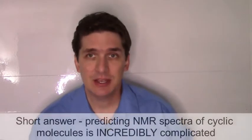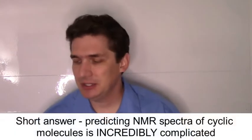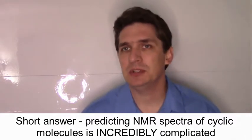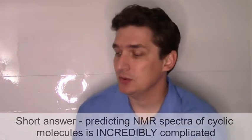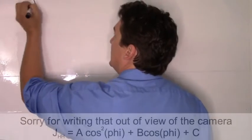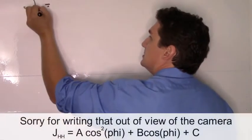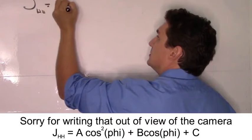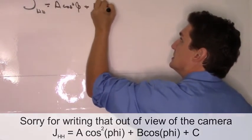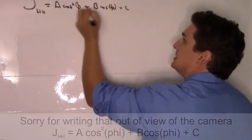We'll start with cyclic molecules. To understand them, we need a level of theory above what we typically cover in organic chemistry one or two. The J-coupling constant has an equation: the J-coupling constant between two hydrogens equals A cosine squared phi plus B cosine phi plus C.